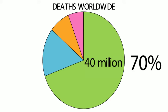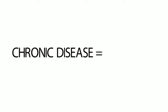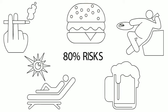Some people say that chronic diseases are inevitable and cannot be avoided. Nothing could be further from the truth. It is estimated that 80% of chronic diseases can be prevented by changing modifiable risk factors such as smoking, poor diet and physical inactivity.